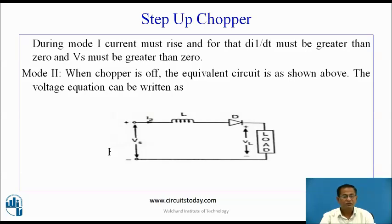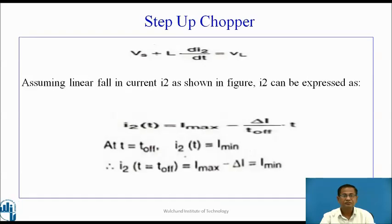Mode 2: When the chopper is off, the voltage equation is Vs + L·di2/dt = VL. During Toff, assuming linear fall in current, the equation is I2(t) = Imax − (ΔI/Toff)·t. At t = Toff, I2 = Imin. Therefore, Imax − ΔI = Imin.